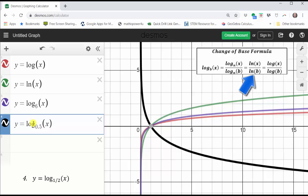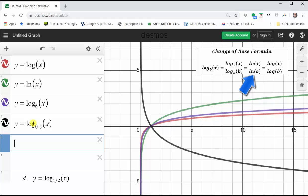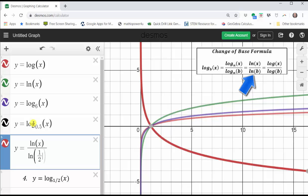Which for example, for this log function, if we press Enter, y equals log base one half of x is equivalent to y equals natural log x divided by natural log one half, which can be entered without any issues. And we can see the red graph and the black graph are the same.